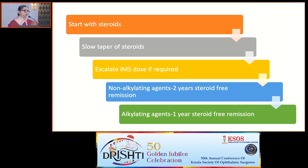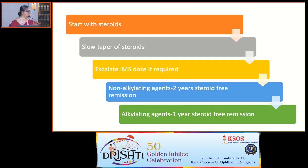A few important points about using immunosuppression in uveitis: most conventional non-alkylating anti-metabolites work very slowly — two to three months — so cover with adequate steroids during that period and taper slowly to avoid reactivation. One-year steroid-sparing success of commonly used conventional immunosuppressives is at best around 60%, meaning about 40-45% of patients don't achieve adequate control. You can start with a smaller IMS dose and escalate. The goal is steroid-free remission, then hold non-alkylating agents for two years, alkylating agents for one year.